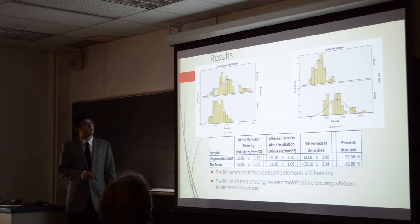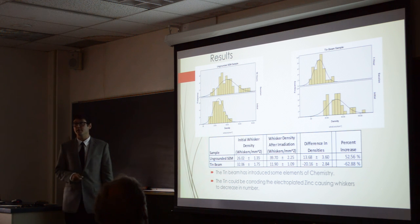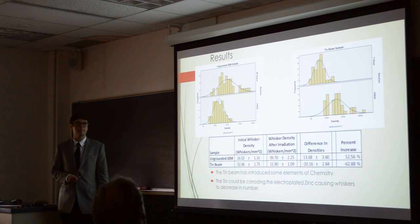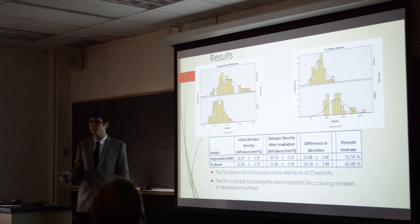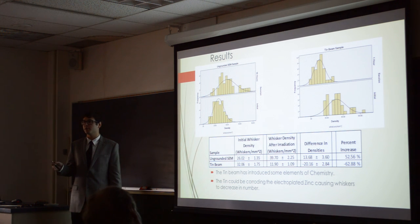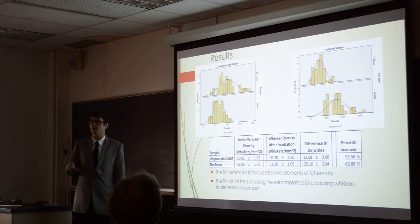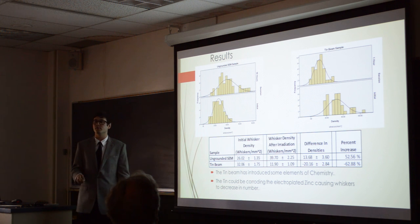The 10B sample showed that the whisker density actually decreased by over 60% after one hour. We believe this happened because the 10B reacted with the zinc oxide, causing corrosion. Since the whiskers are actually made of zinc oxide, if you're corroding the zinc oxide, you're corroding the whiskers as well.